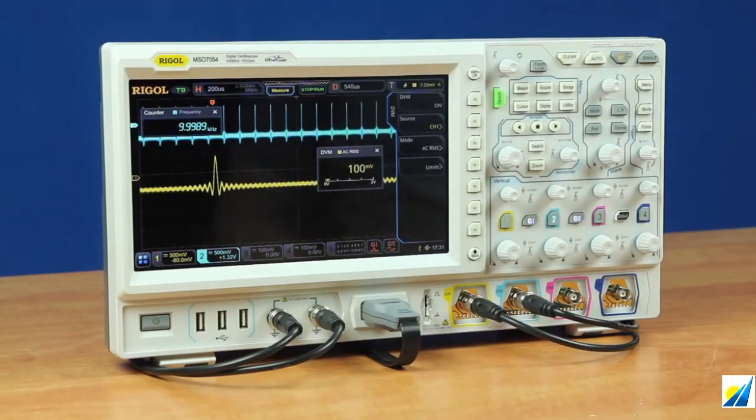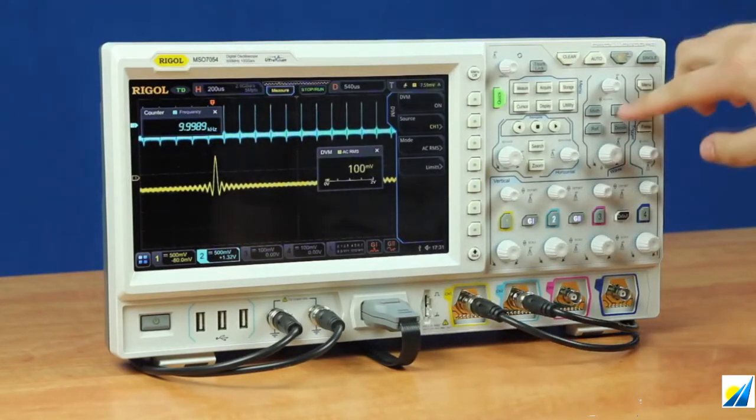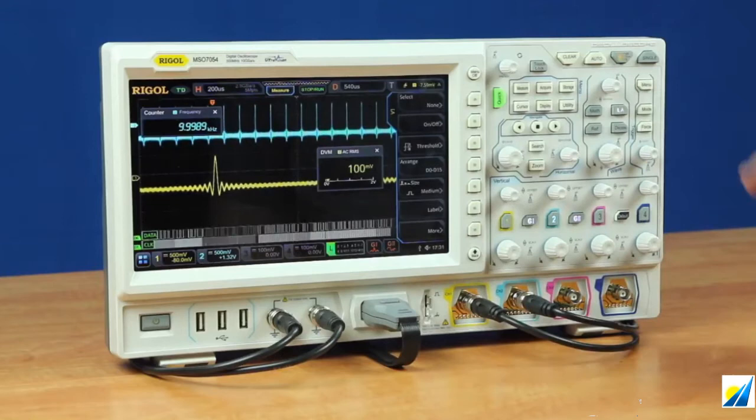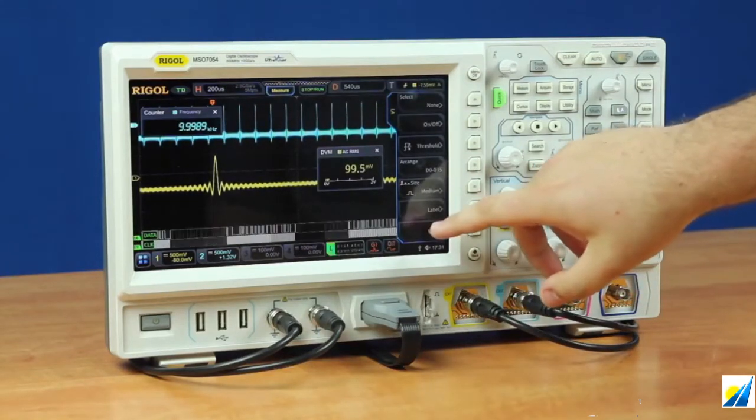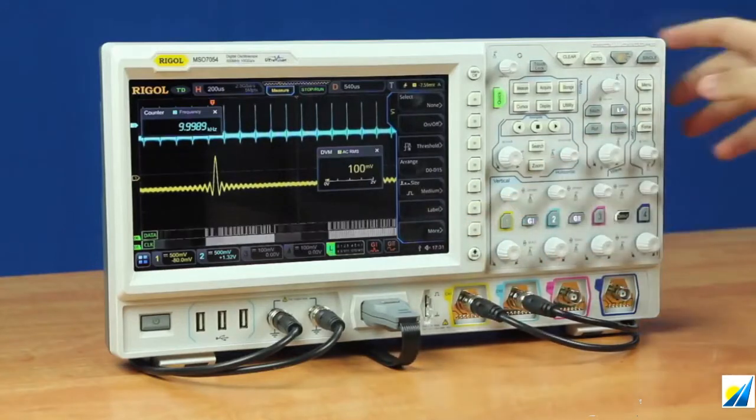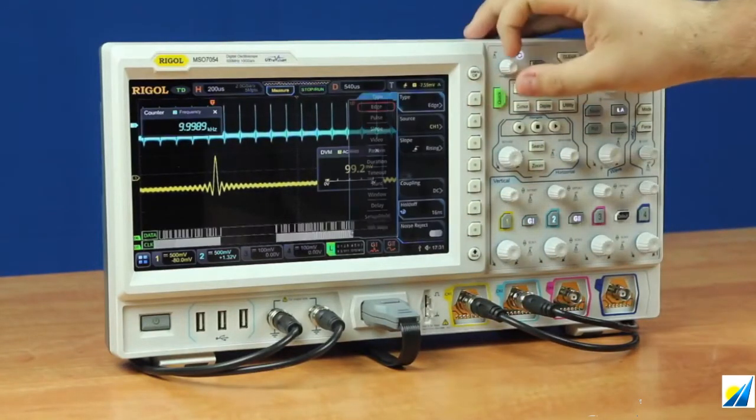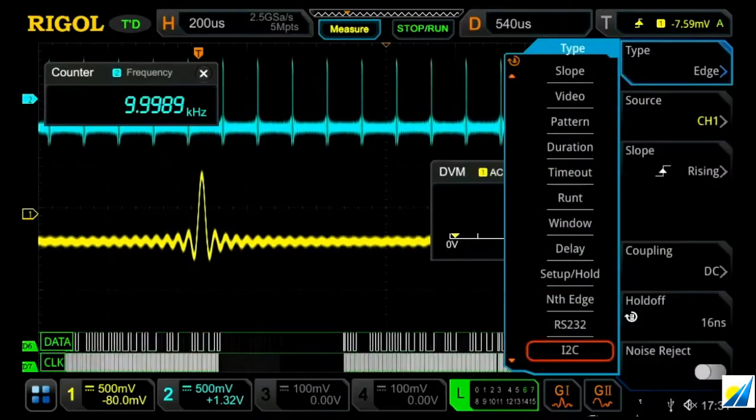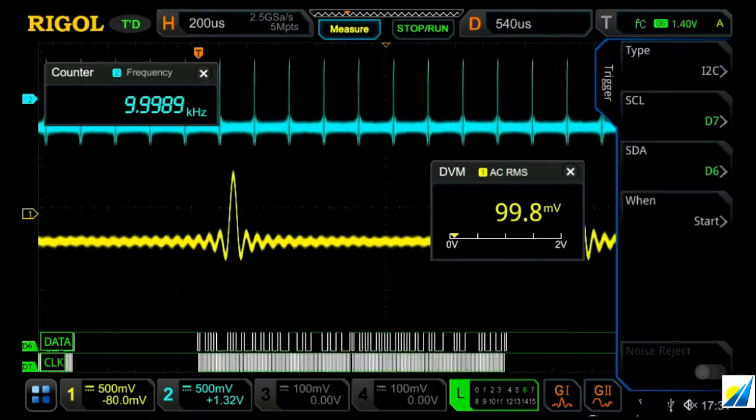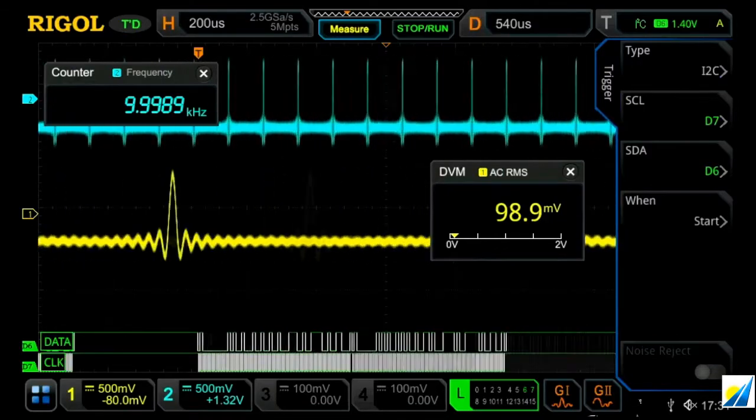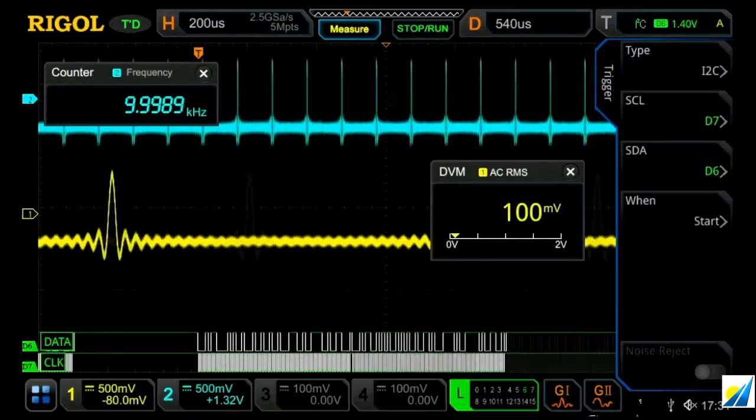Next, we can turn on our 16-channel logic analyzer. In this case, we have on the bottom our clock signal, and above that is our data signal. And that's for an I squared C signal. We can also then go over to our trigger menu to make that a little bit more stable, and go down to I squared C. And then once we've got that turned on, we've got our I squared C signal a little bit more stable on the bottom of the screen.